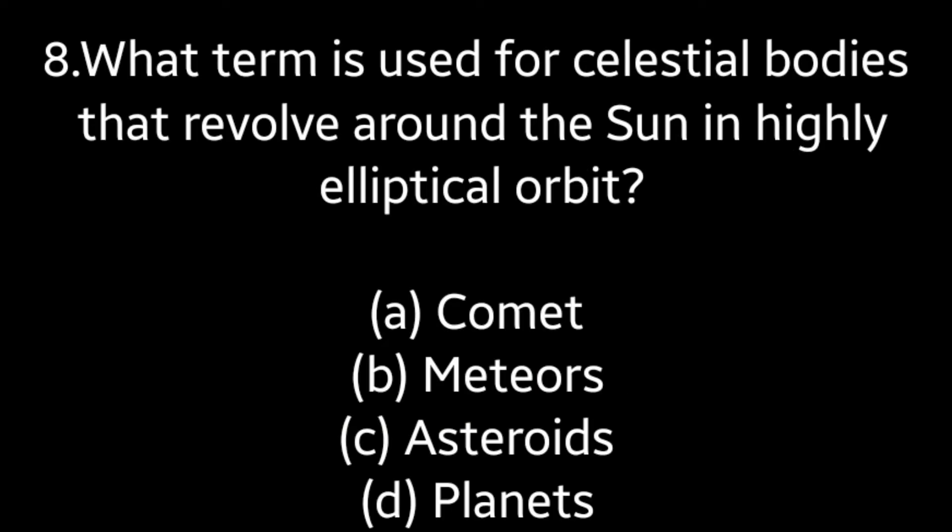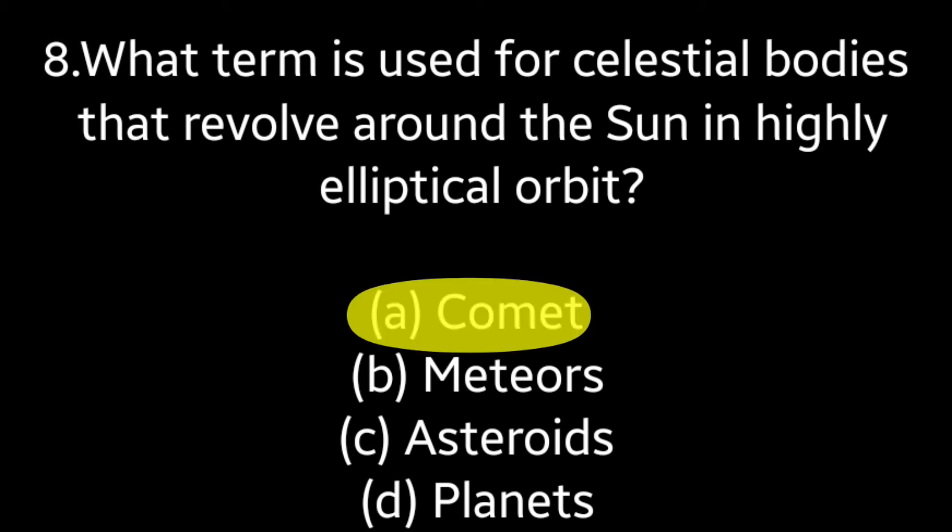Question number 8: What term is used for celestial bodies that revolve around the sun in a highly elliptical orbit? Options: Comet, Meteors, Asteroids, Planets. Answer is option A — Comet.